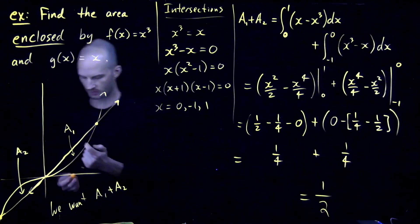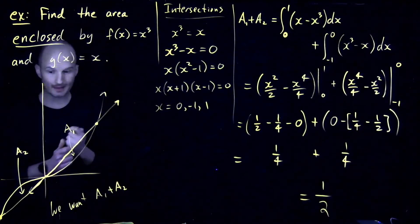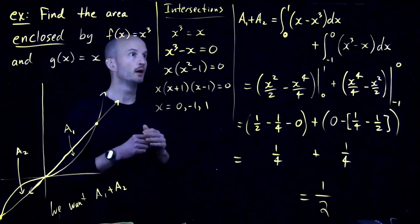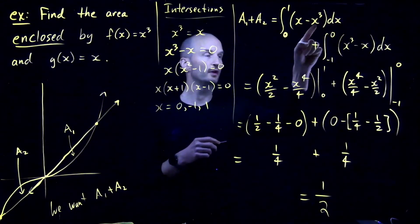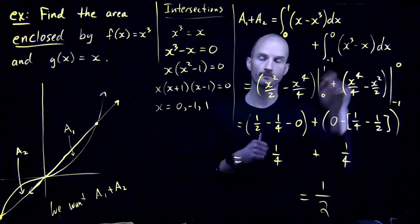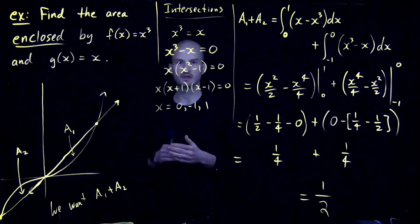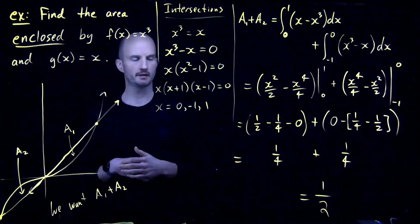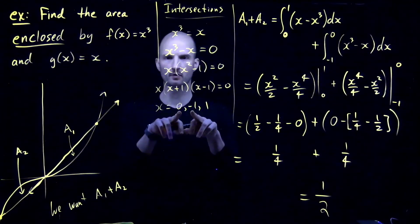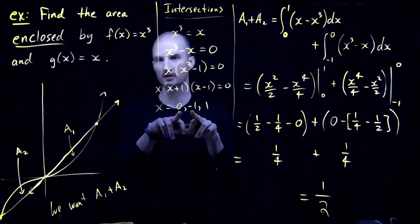Okay, so I had a picture here. I was able to draw a picture. That allowed me to decide on who is the upper and who is the lower, who is the upper, who is the lower. If you don't have a picture, you can use test points. Okay, so if I want to find, you know, what's happening between 0 and negative 1.